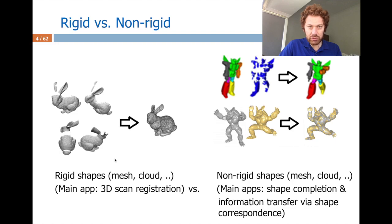The main application of rigid shape registration is in 3D scanning, which is a very significant business — it's also a commercial thing. You can scan stuff for industry purposes, for entertainment purposes, etc. Basically, you will be able to scan one particular angle at a given time, so you will do multiple scans and there will be a way to merge, align, or register those scans. The term 'register' comes from there.